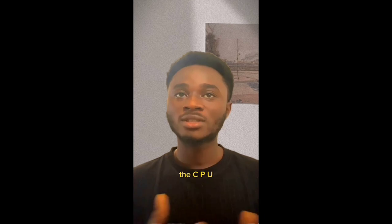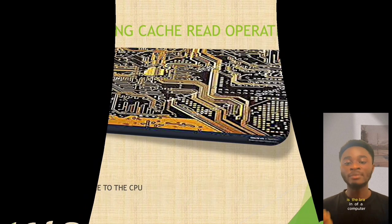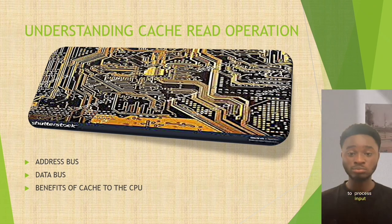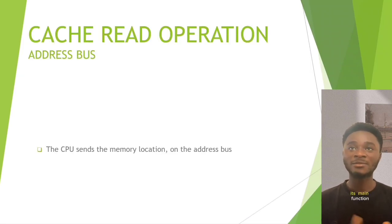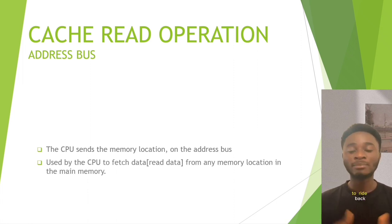As we all know, the CPU — the central processing unit — is the brain of a computer. It contains all the circuitry needed to process input, store data, and output results. Some functions of the CPU include: fetch, execute, decode, write back, and so on.